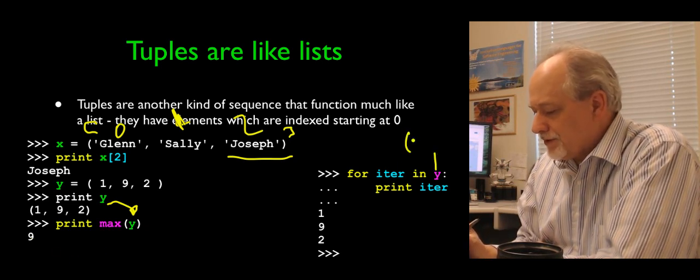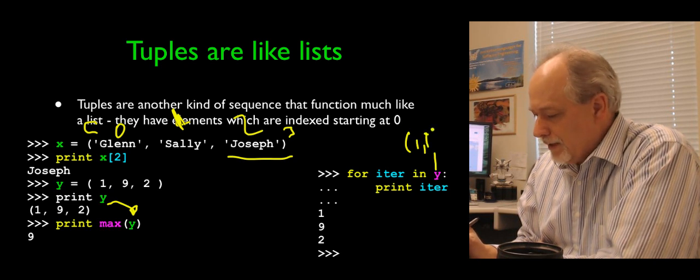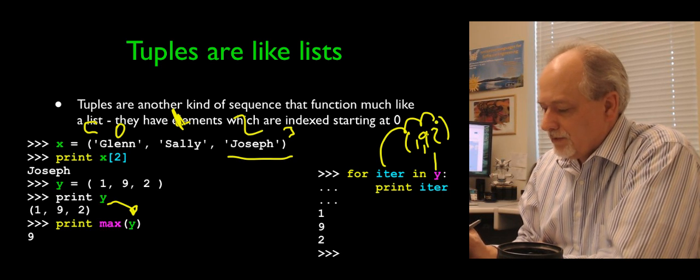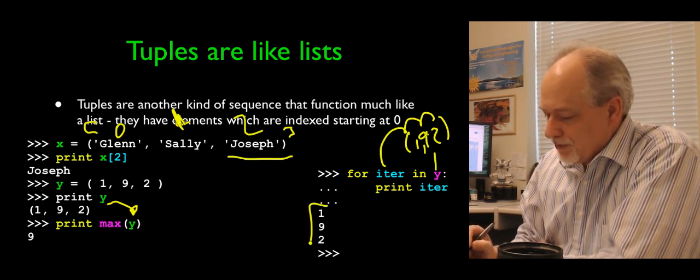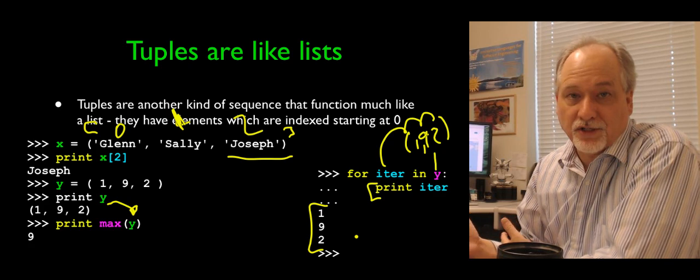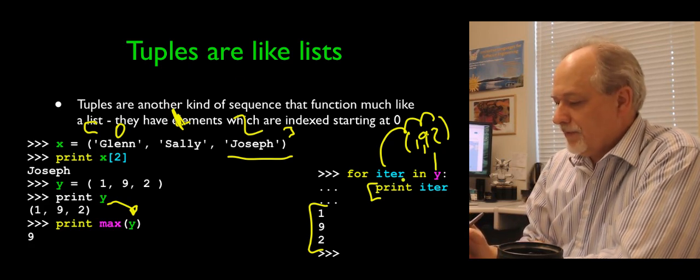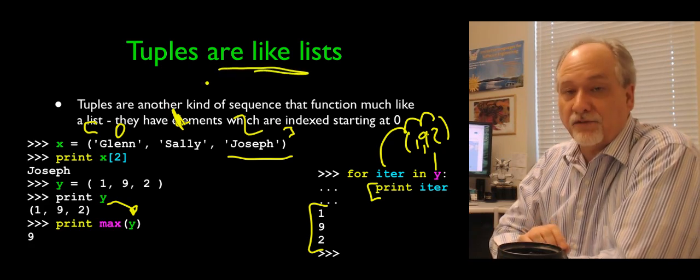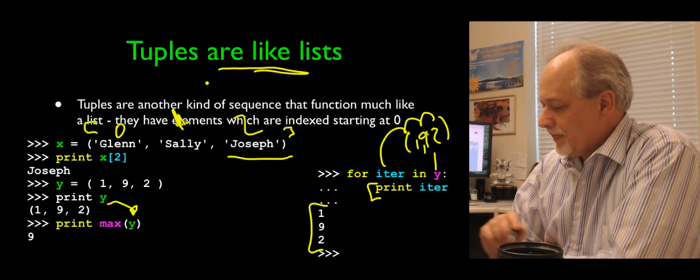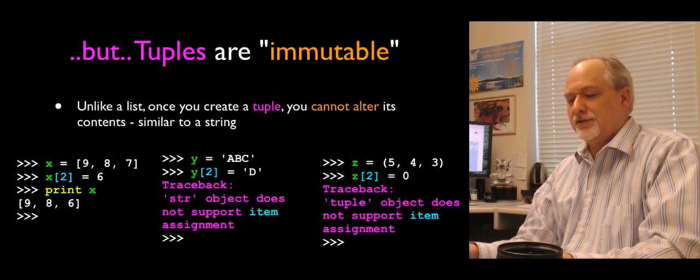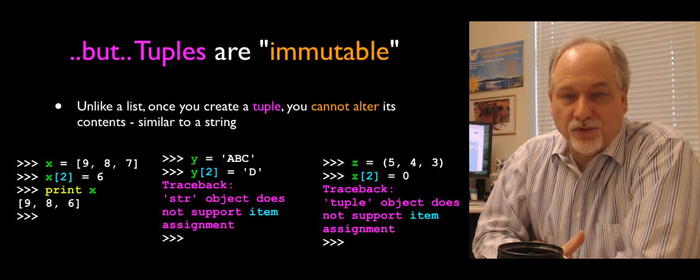So the maximum of 1, 9, 2 is 9. And we can loop through them. It's 1, 9, 2. Iteration is going to go through the three values and print out 1, 9, 2. It runs the indented code once for each of the values inside the tuple. And so in this respect, they're very much like lists.